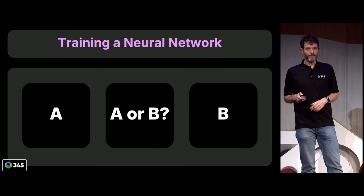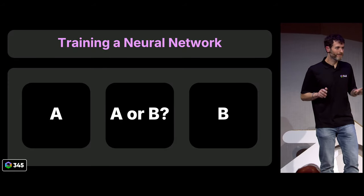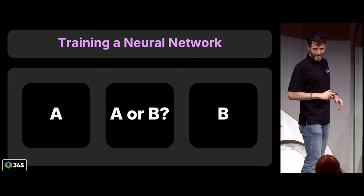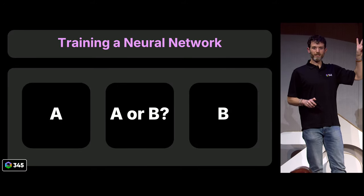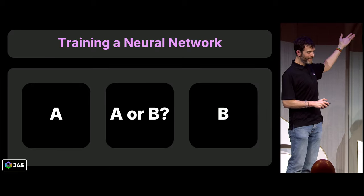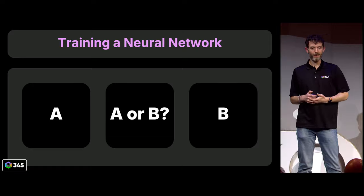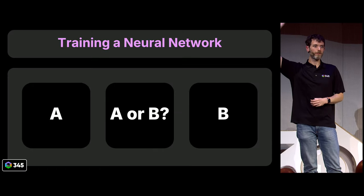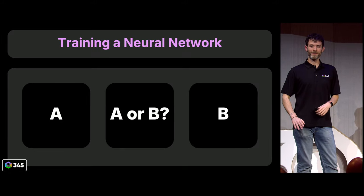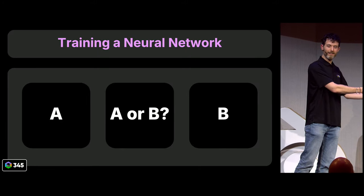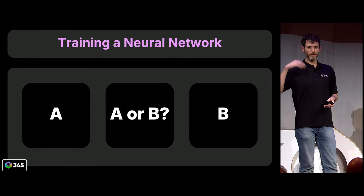Here's the audience participation I promised. I know it's the end of the day, but let's get a bit of energy. I'm going to show you what it's like to train a neural network. I'll give you three images — two of them are going to be the same and one is going to be different. The one in the middle is either the same as the one on the left or the same as the one on the right. Put your hand up if you think the image in the middle is the same as the one on the left; keep your hand down if you think it's the same as the one on the right. Participation is mandatory because those are the only two options.